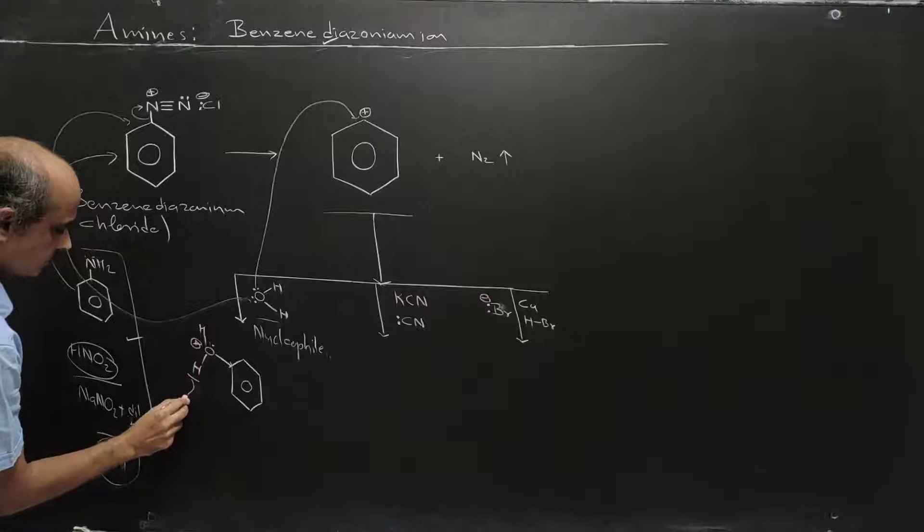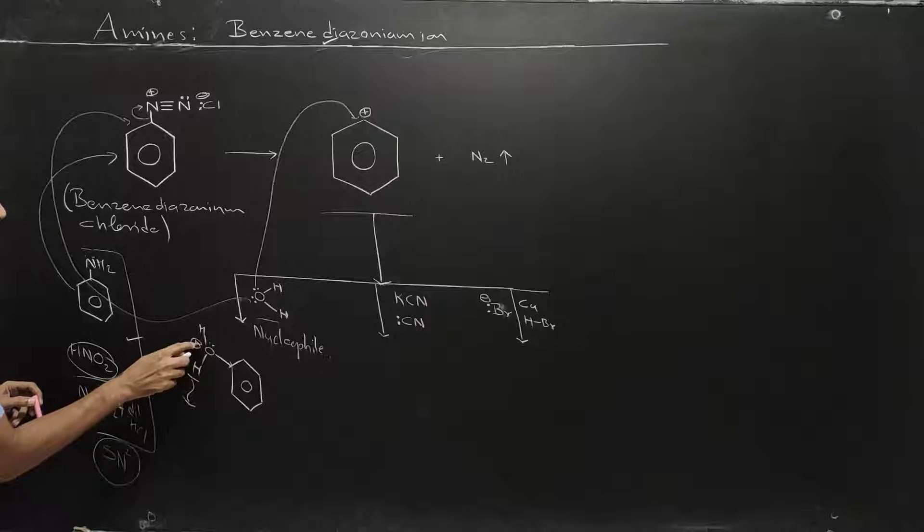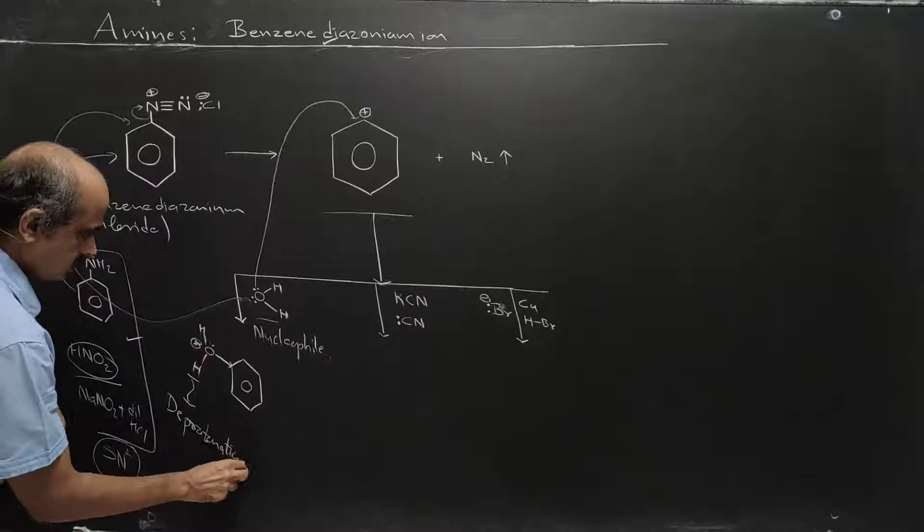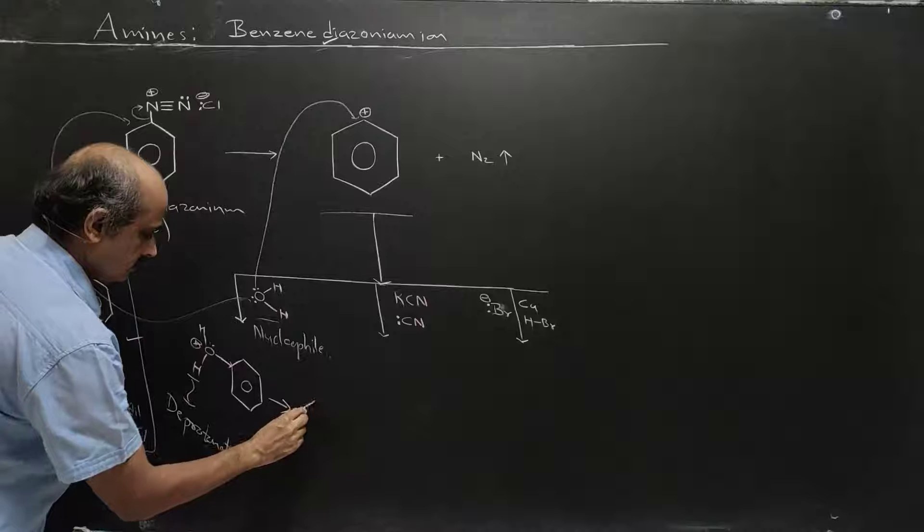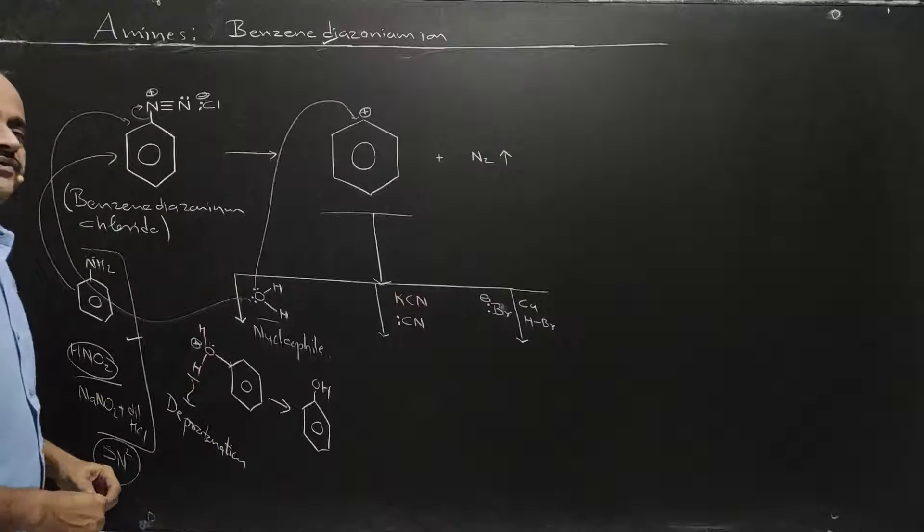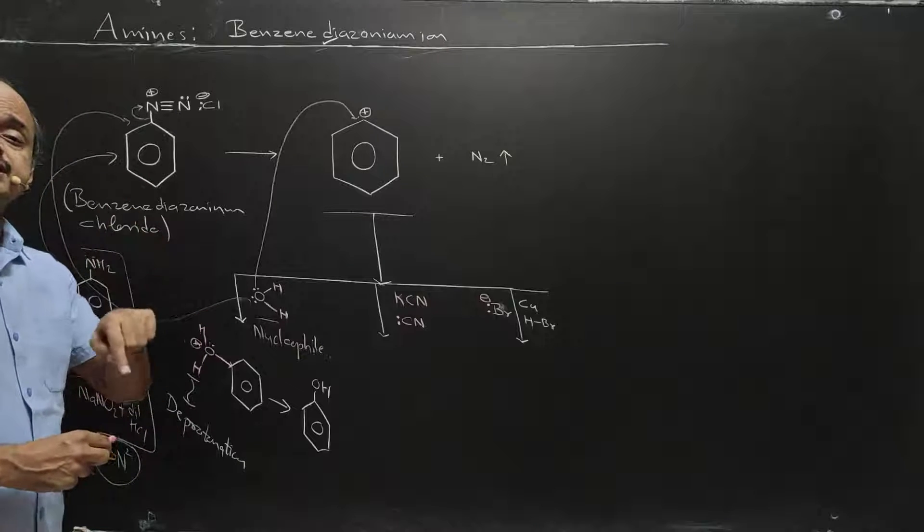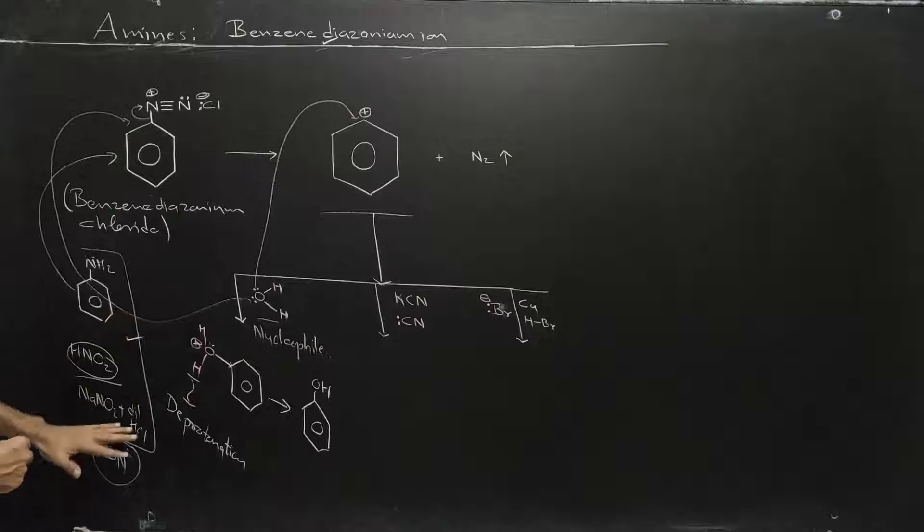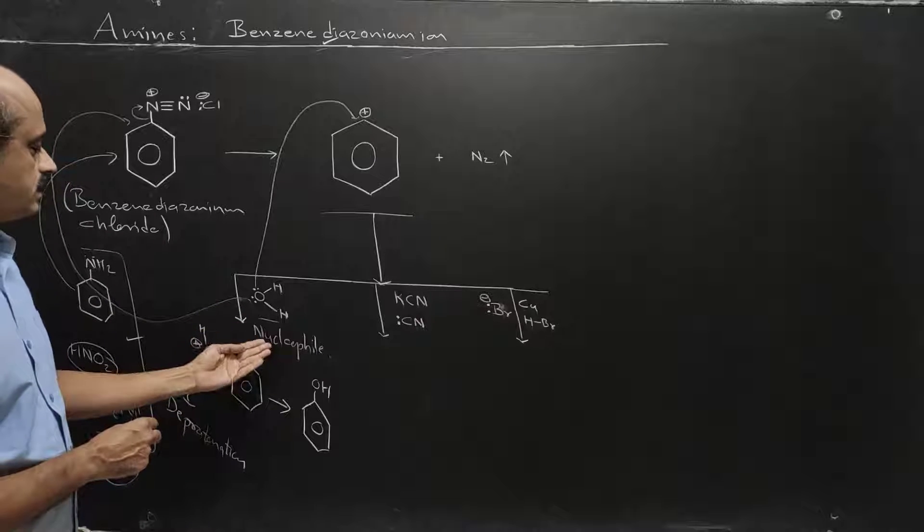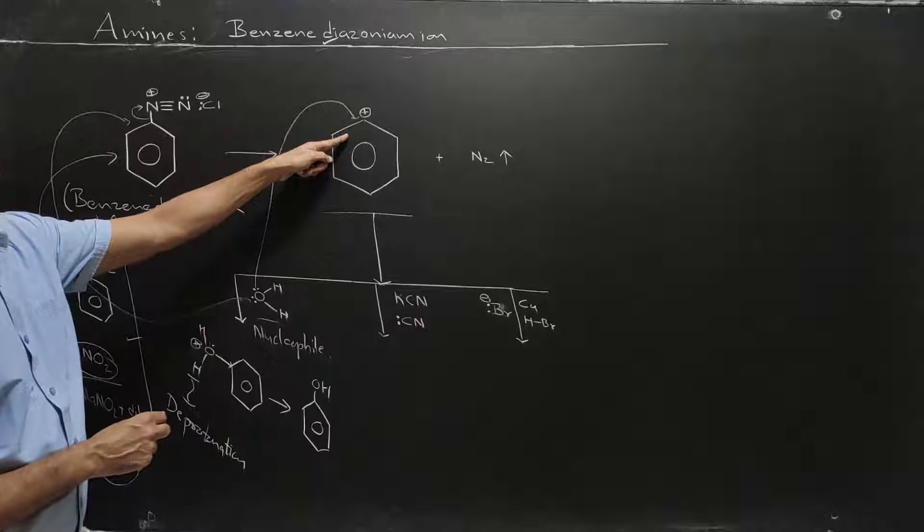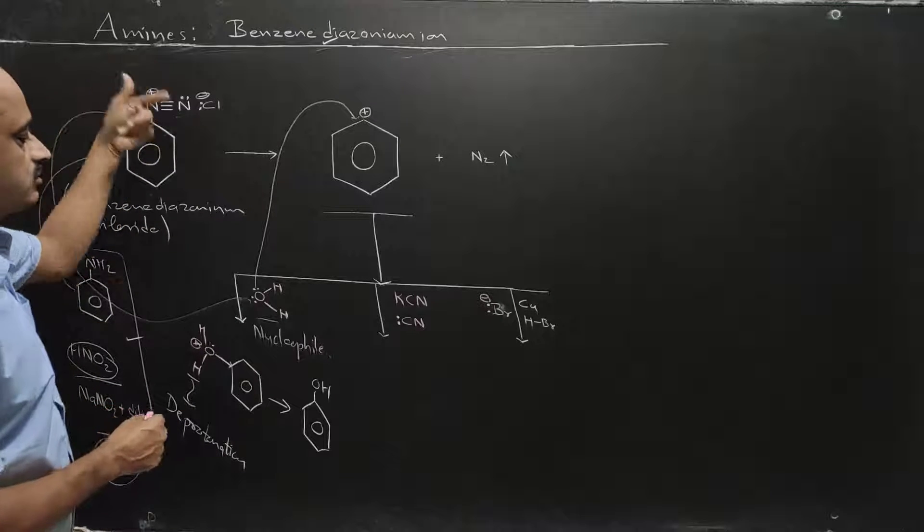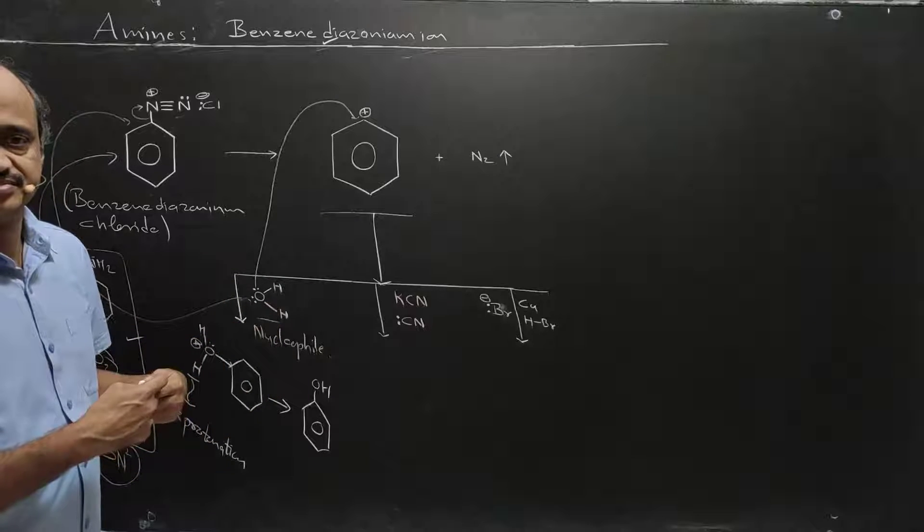The lone pair is here. Then deprotonation occurs - the O-H bond becomes more polar and positive charge develops. Deprotonation by water removes the proton and phenol is formed. So aniline to phenol occurs via benzene diazonium ion. Water acts as a weak nucleophile but attacks easily because of the electron deficient center and nitrogen's tendency to leave.